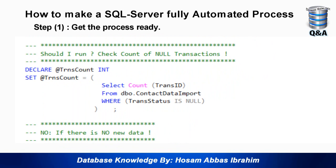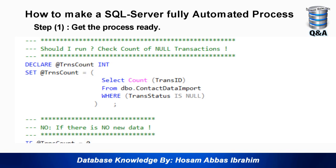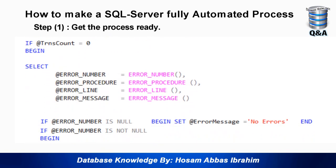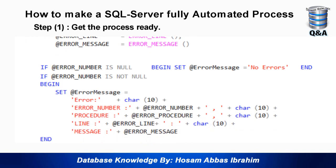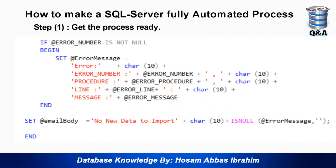To identify whether to run, we do a COUNT from the staging table where the transaction status is NULL. I declare a variable for the count. If it is zero, that means all data there has already been processed. I then capture the error number, and if the error is NULL I set the error message to 'No Errors'; if there is an error I set the error message accordingly, and set the email body to 'No new data to import' plus the error message.